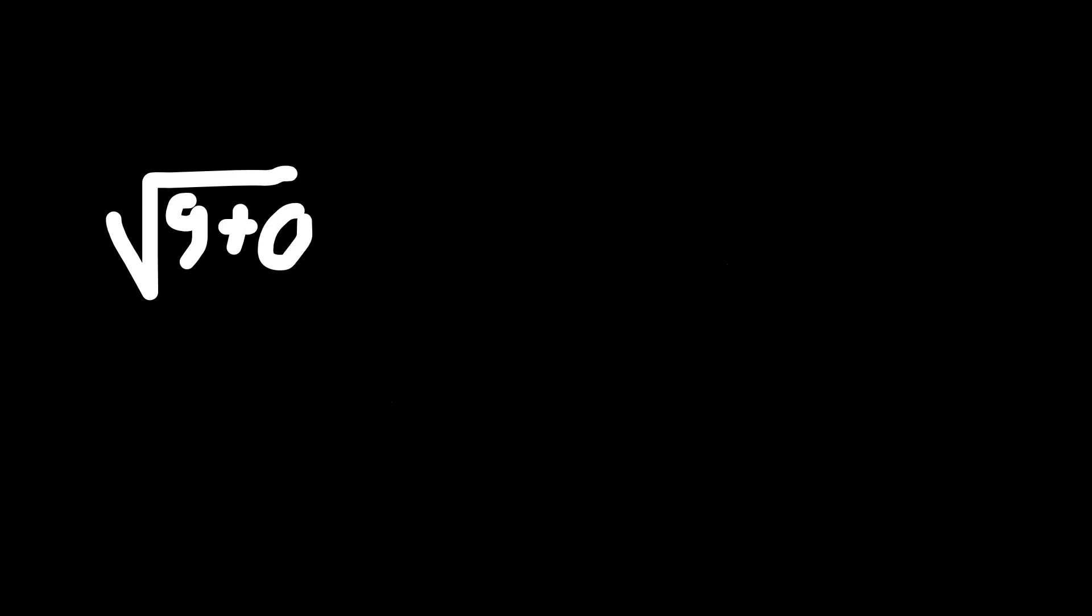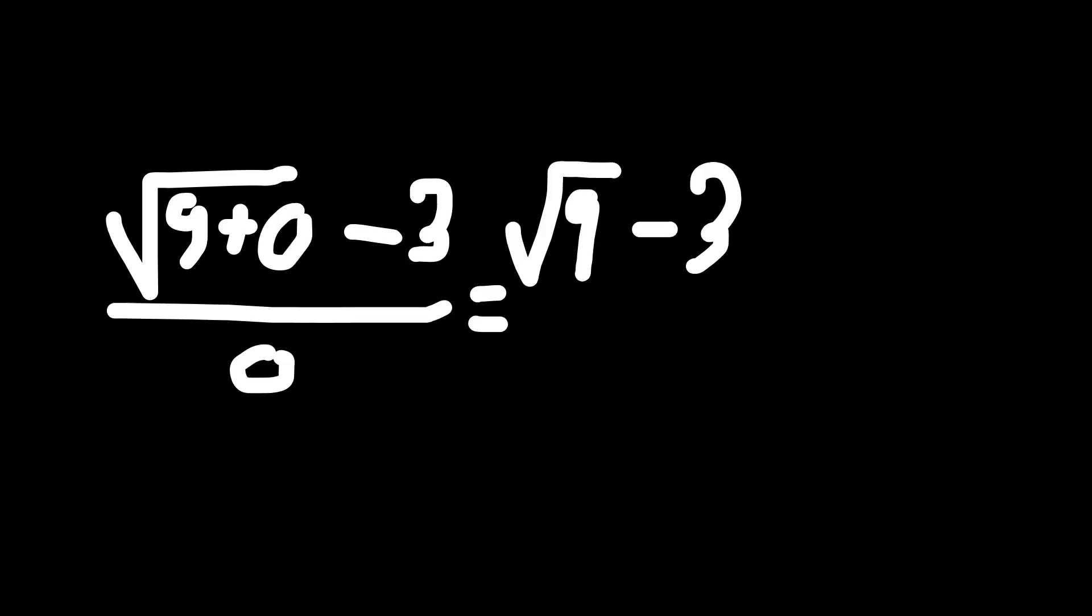So first you're going to plug in 0. That's going to give you the root of 9 minus 3 over 0, which is then 0 over 0, which is undefined, so you cannot just use direct substitution.